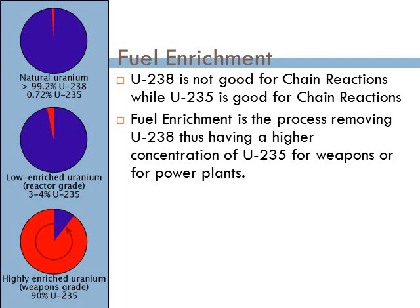If you wanted supercritical mass, you would need even higher enrichment. For weapons, you're looking for around 90% uranium-235. This distinction is what separates subcritical, critical, and supercritical masses.